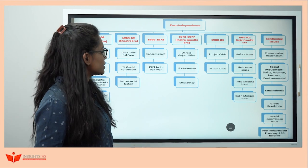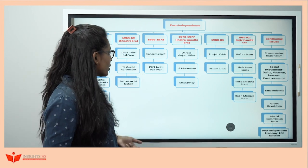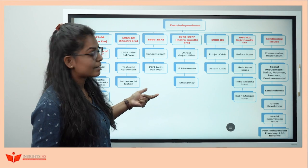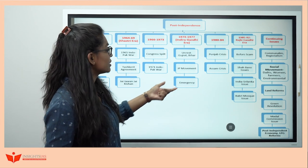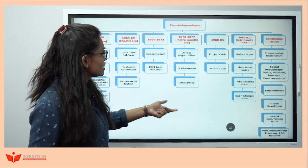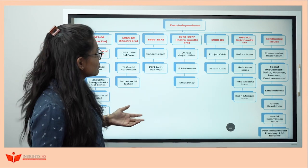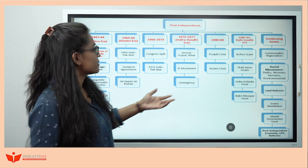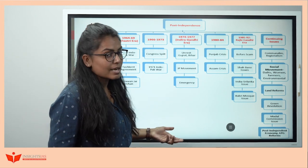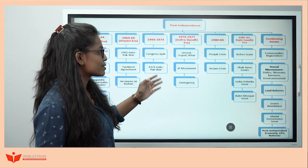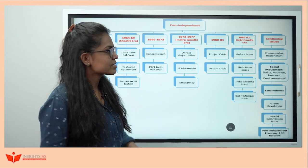During the Indira Gandhi era: there was the 1971 Indo-Pak war, the Congress split happened, then there was the Emergency, the Punjab crisis and the demand for Khalistan, the Assam crisis — and that's why the Assam Accord was signed.